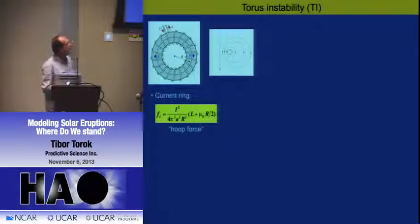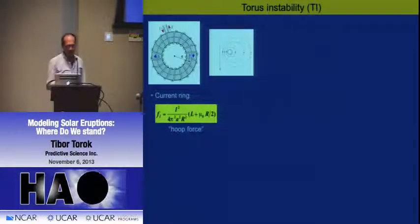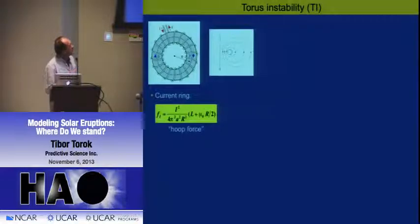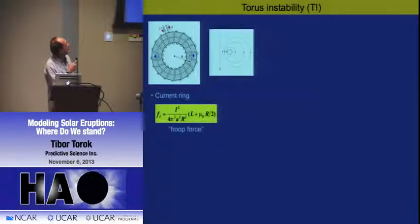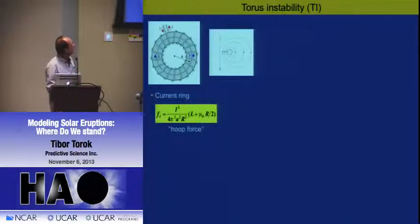The torus instability—plasma physicists may know it as the horizontal tokamak instability—has been studied for quite a while in fusion research but had not been applied to CMEs. To give you an idea: consider a ring current. You have a current flowing in this ring geometry. This is not stable, because the curvature of the current gives you an outward-directed force—often called the hoop force—so this current ring just wants to expand.